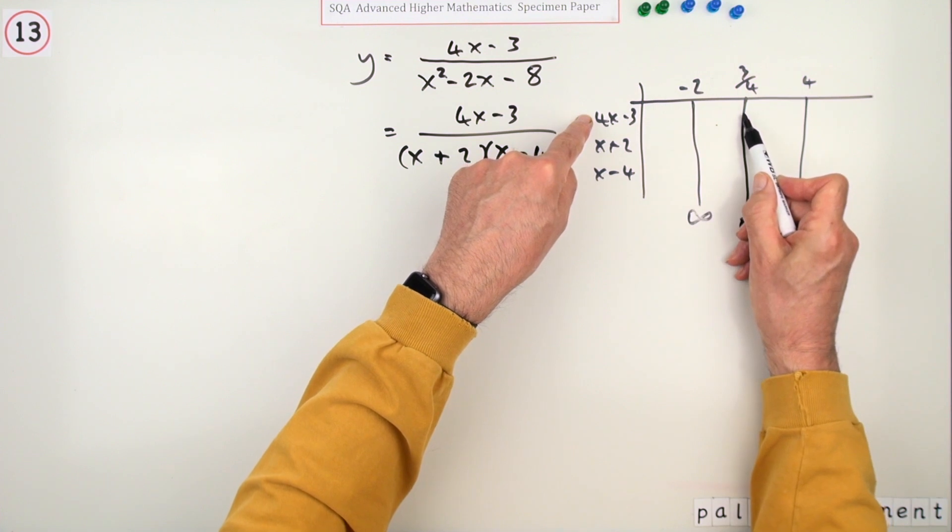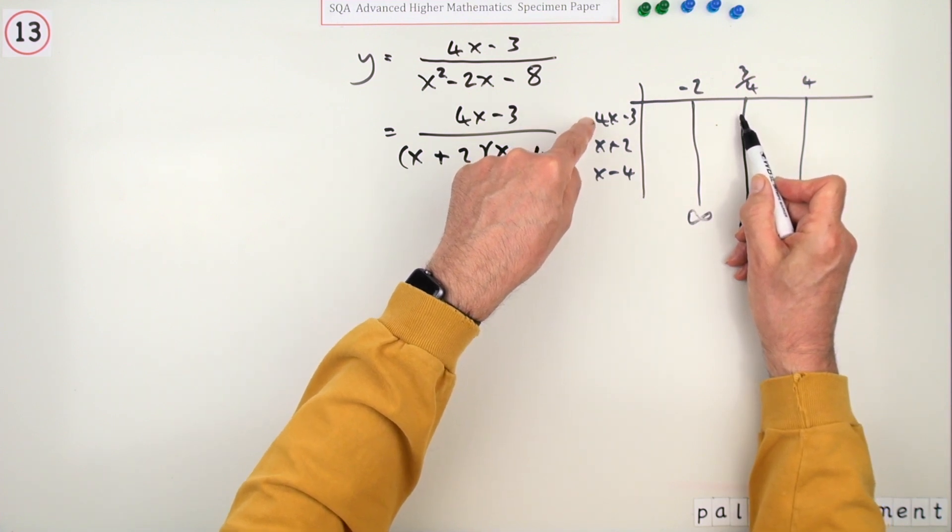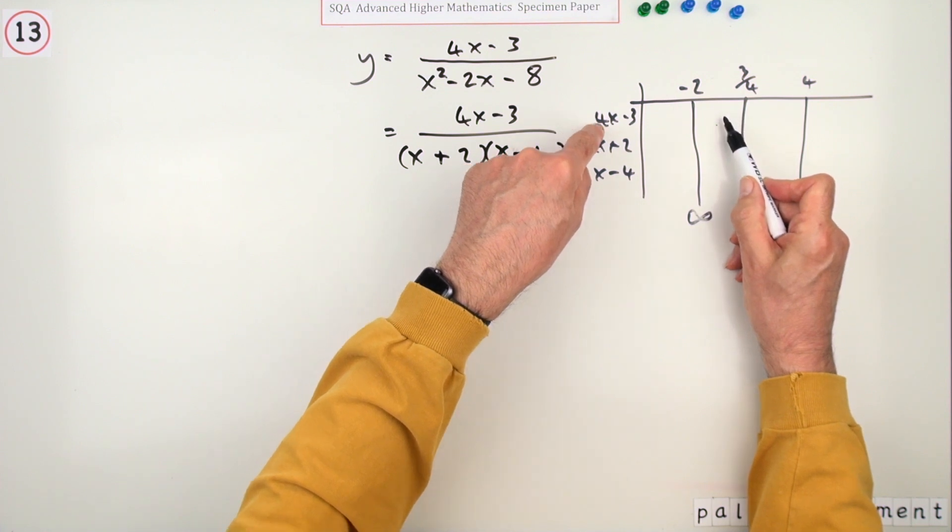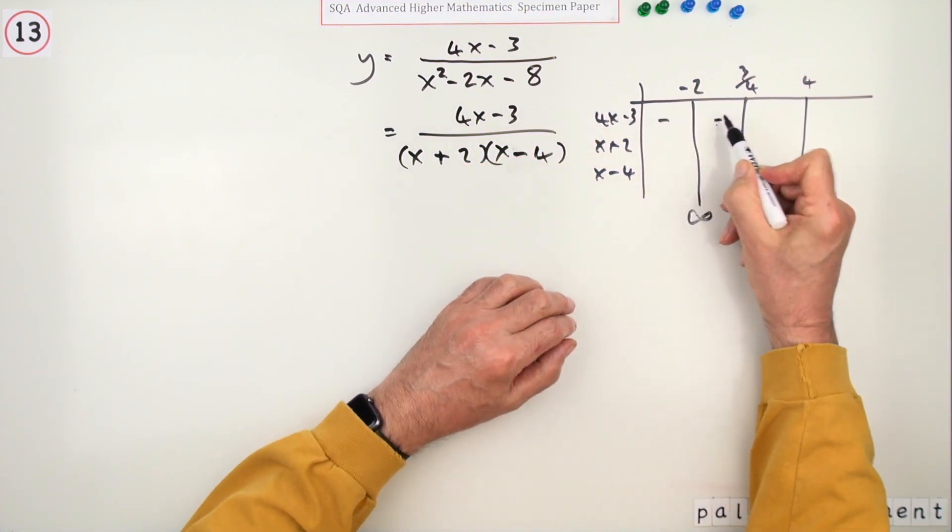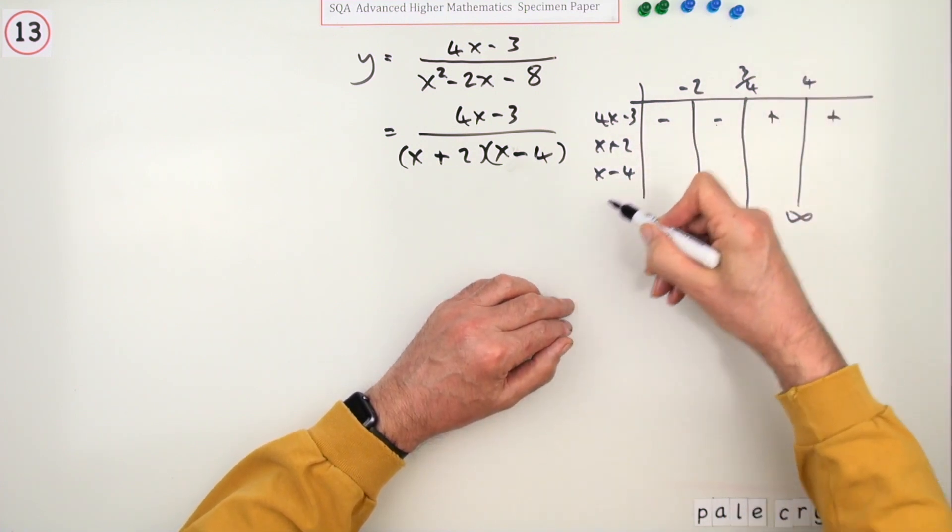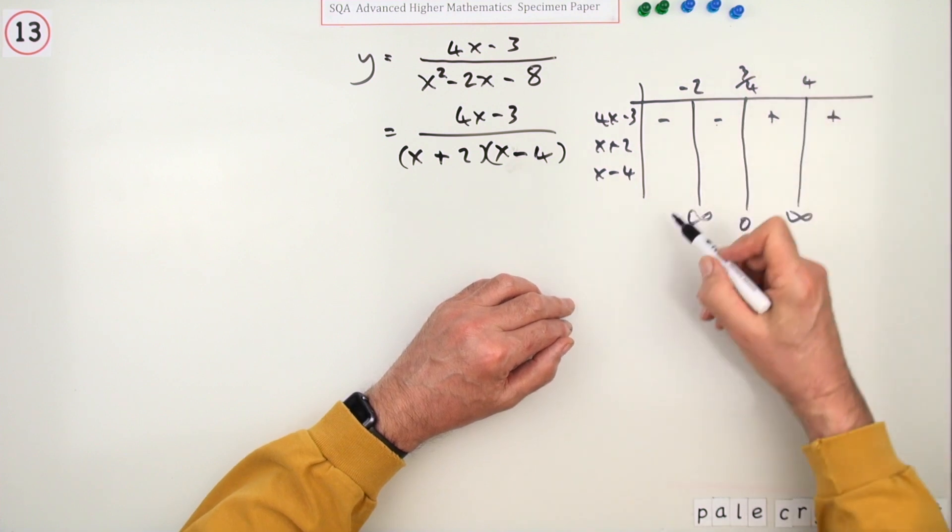That one is zero here. It's a positive x, so before it, pick any value of x before three quarters and it'll be negative, and then it'll turn positive afterwards. The line 4x minus 3 increases; at zero here...